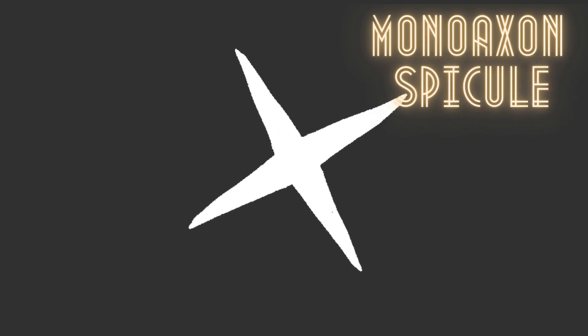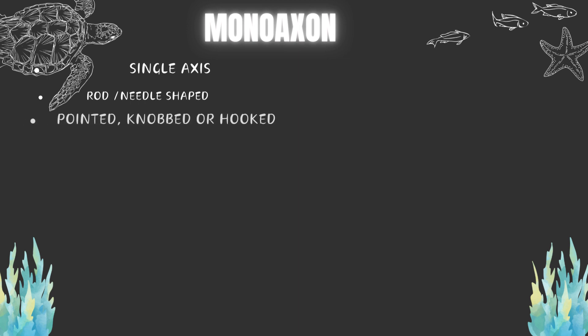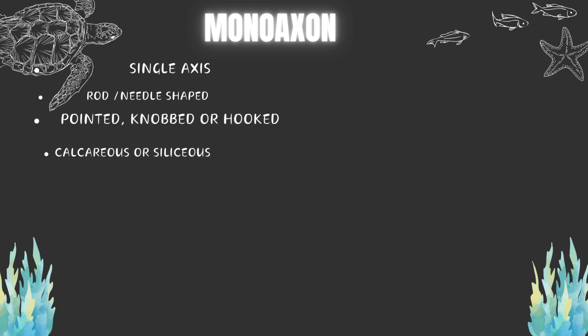Monoaxon spicules have a single axis, so they are rod- or needle-shaped which may be straight or curved. Their ends may be pointed, knobbed, or hooked. These may be calcareous or siliceous and commonly project from the sponge surface giving a bristle appearance, while in osculum these form an oscular fringe.